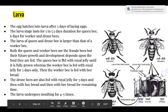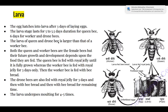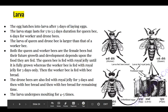The egg hatches after three days and the larva stage lasts five to five-and-a-half days for the queen bee, whereas six days for worker and drone bees. The larva of queen and drone bees is larger than that of worker bee.